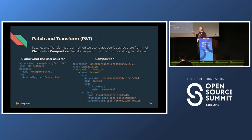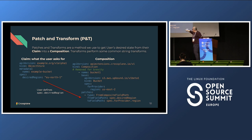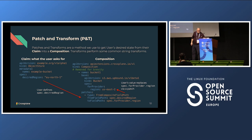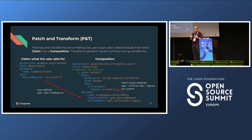The way it works is when a user creates a claim — asking for an object store, which is an abstracted bucket, specifying a desired region — we take that spec desired region and use something called a patch. It takes that spec desired region and patches it back up to the spec for provider. This is patch and transforms — you can do many things dynamically with infrastructure within Crossplane using patches, transforms, selectors, and references. Most people are running very complex infrastructures on top of this today.